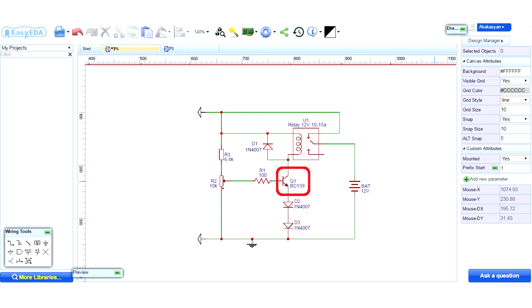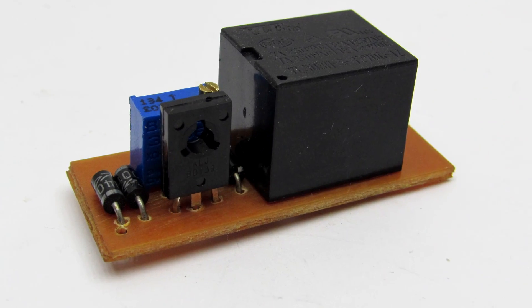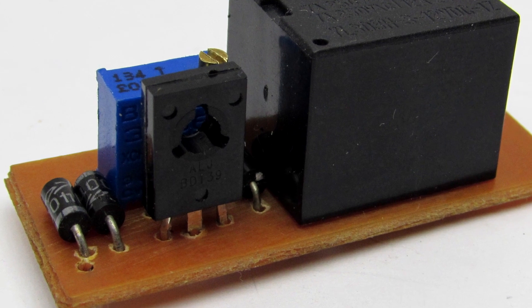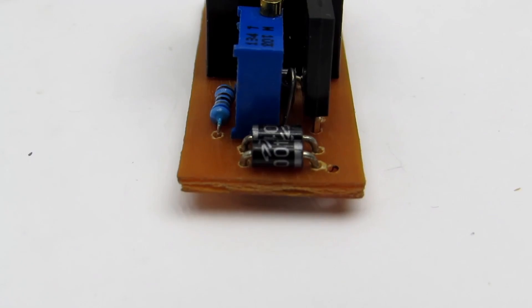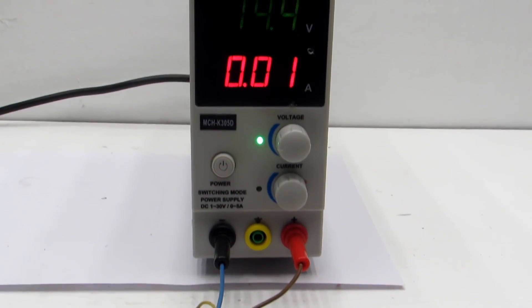The transistor may be any reverse conduction. I advise you to take medium-powered transistors such as BD139. The diode in the emitter circuit is also not critical. Circuit current consumption is only 10 or 20 milliamps.